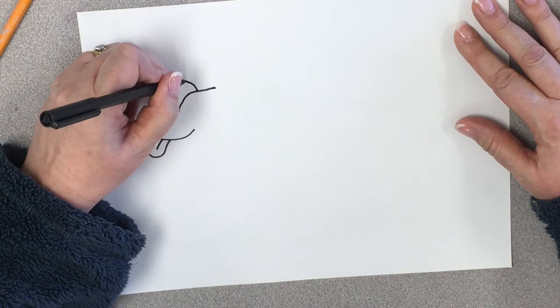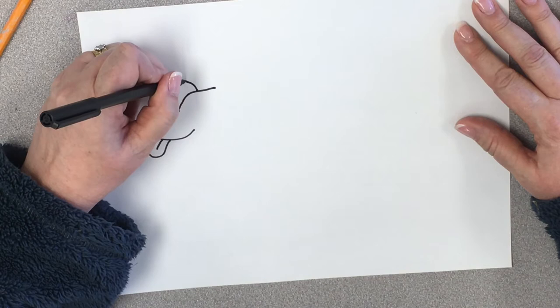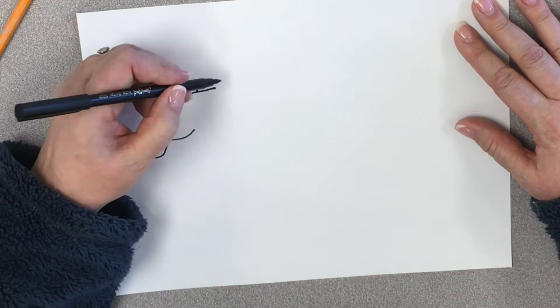And then we've got a little line coming up, across, and down, and then back around. And that's the ear that's hanging over the other side. Then we've got an ear right here.